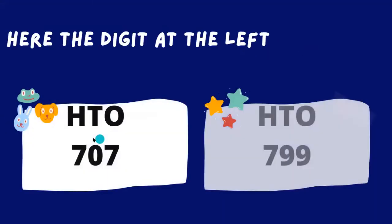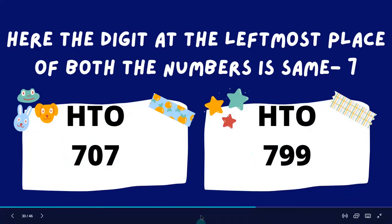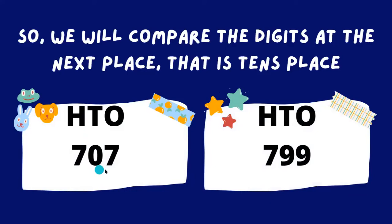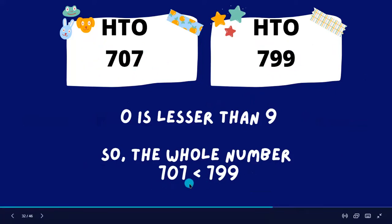Here the digit at the leftmost place of both numbers is the same — that is 7. So we will compare the digits at the next place, which is the tens place. Zero is less than nine, so the whole number 770 is less than 799. We can also write it using the less than sign.